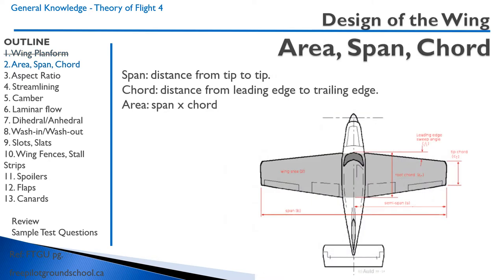Some definitions to get started. The span is the distance from wingtip to wingtip. The chord is the distance from leading edge to trailing edge. On wings that are tapered, it's called a mean aerodynamic chord — the mean or average chord on that wing. The area is the span multiplied by the chord, given in square feet.